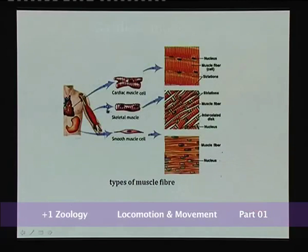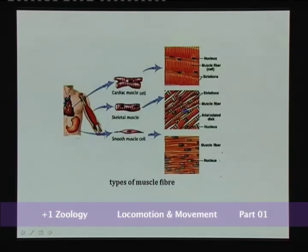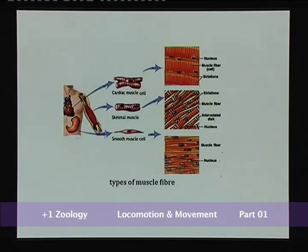Overall there are three types of muscles: cardiac, skeletal, and smooth. Skeletal muscle fiber is cylindrical, unbranched, multinucleated, and striated. Cardiac muscle fiber is cylindrical, branched, uninucleated, and striated. Smooth muscle cells are spindle-shaped, uninucleated, and smooth — showing absence of striations.